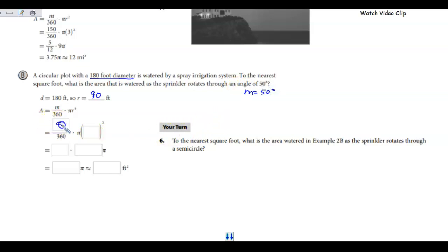My measure of my angle is 50 degrees. So I have 50 over 360 times pi times 90 squared, which is 8,100. So I take my 50 and my 360. If I divide them both by 10, I get 5 over 36.